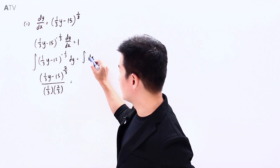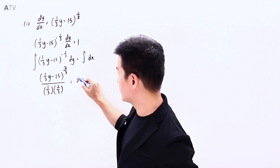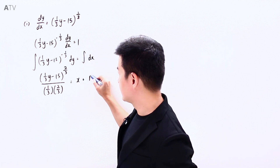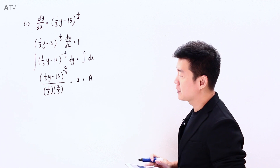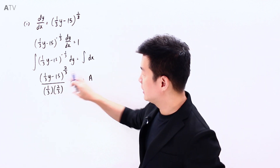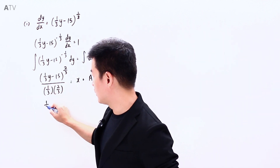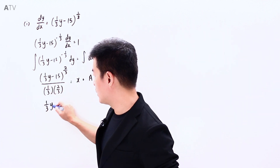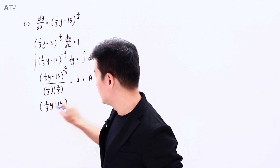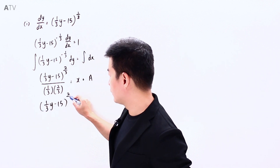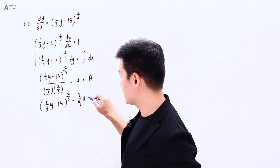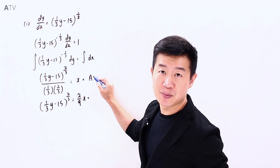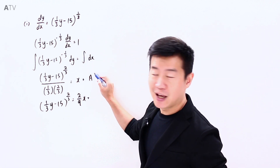Integrating 1 gives x plus an arbitrary constant. Multiplying across to the other side, I will have (1/3y − 15)^(2/3) equal to 2/9 x plus 2/9 times a constant.